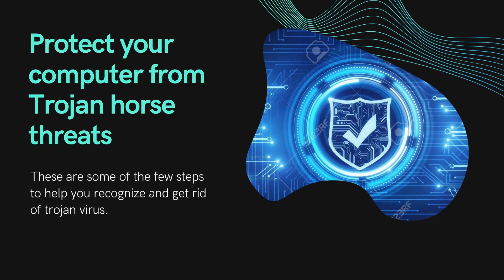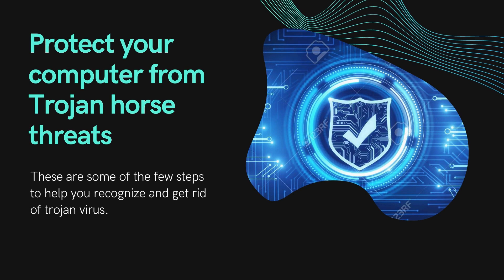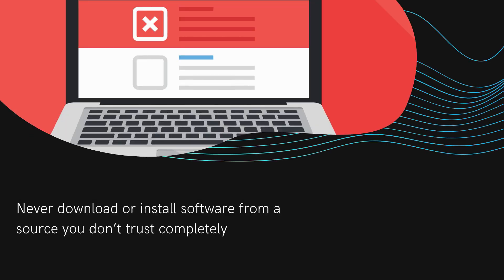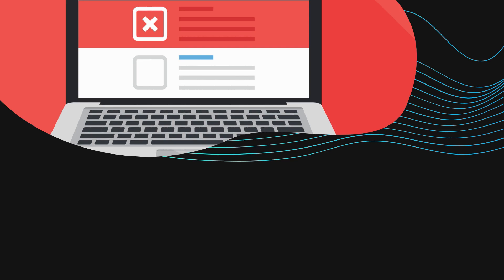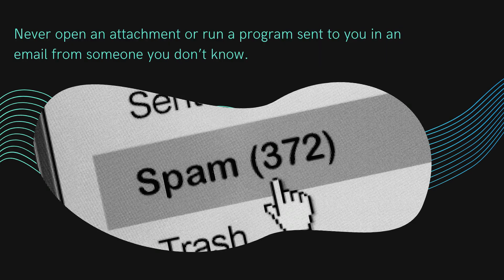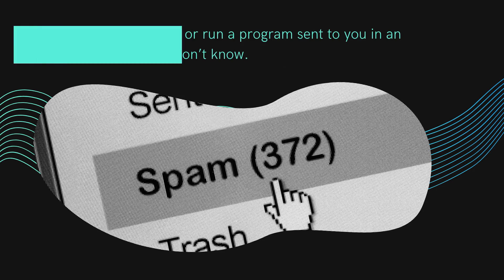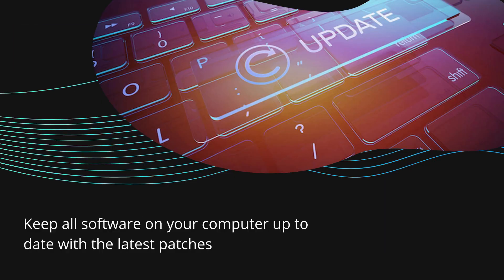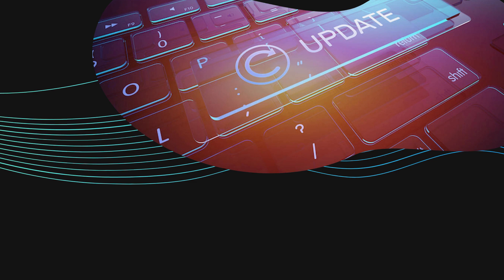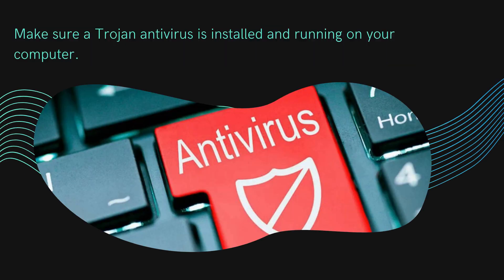To protect your computer from Trojan horse threats: never download or install software from a source you don't trust completely. Never open an attachment or run a program sent in an email from someone you don't know. Keep all software on your computer up to date with the latest patches, and make sure a Trojan antivirus is installed and running on your computer.